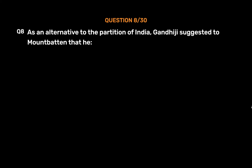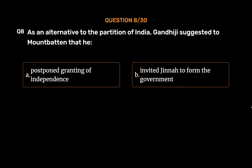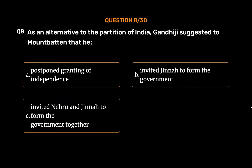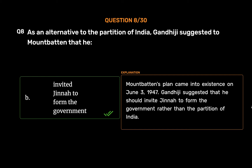Question No. 8. As an alternative to the partition of India, Gandhiji suggested to Mountbatten that he: Option A: Postpone granting of independence. Option B: Invite Jinnah to form the government. Option C: Invite Nehru and Jinnah to form the government together. Option D: Invite the army to take over for some time. The correct answer is Option B: Invite Jinnah to form the government. Mountbatten's plan came into existence on June 3, 1947. Gandhiji suggested that he should invite Jinnah to form the government rather than the partition of India.